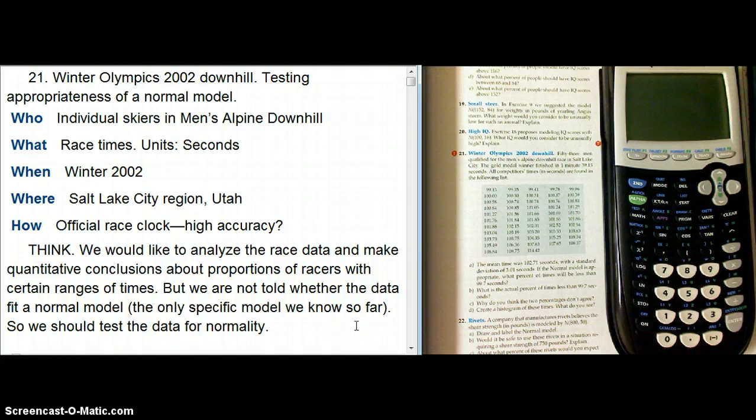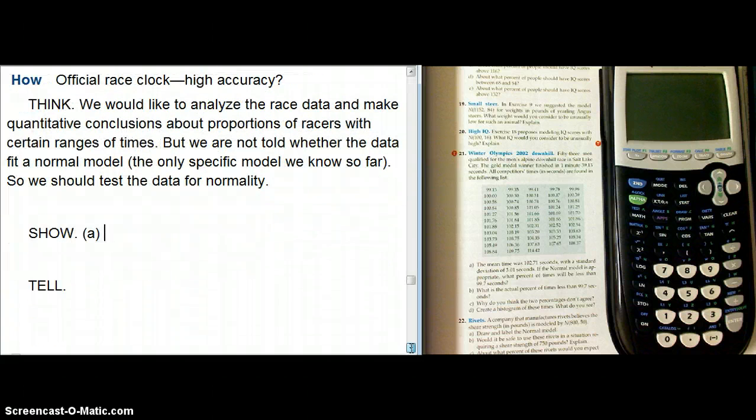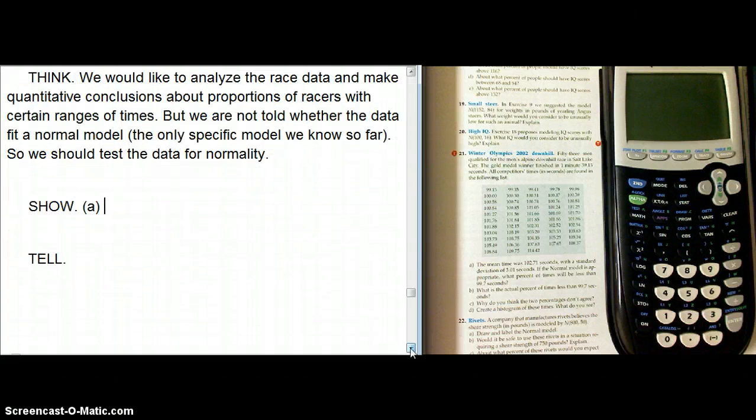And probably in another video I'll talk about how the only thing so far I've disliked about this book is that in this chapter, they basically give you the impression that lots and lots of things are normal and that anything that's unimodal and symmetric is basically normal. Just not true. It's a very important mistake a lot of people make.